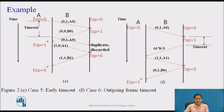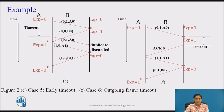Figure 2e also shows case 6. Here, the data link layer waits a fixed number of milliseconds for a packet from the network layer on which to piggyback the acknowledgement. If a new packet arrives quickly, the acknowledgement is piggybacked onto it. Otherwise, if no new packet has arrived by the end of the time period, the data link layer just sends a separate acknowledgement frame.